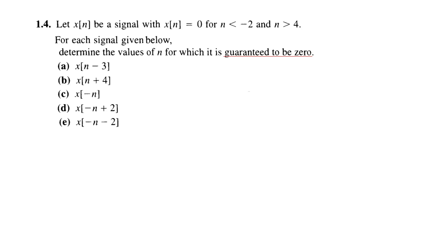Let's see what is the question. Let x[n] be a signal with x[n] equals 0 for n less than minus 2 and n greater than 4. So let's stop here and see what does this mean. For this we will draw a discrete time signal. When we are writing x[n] that means it is a discrete time signal and the discrete time signal is drawn like this.